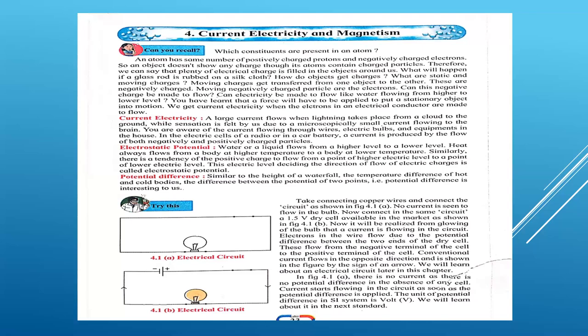For example, water or liquid flows from a higher level to a lower level. Also, heat always flows from a body at higher temperature to a body at lower temperature. In the same way, the positive charge flows from a point of higher electric level to a point of lower electric level.